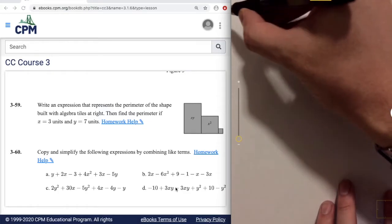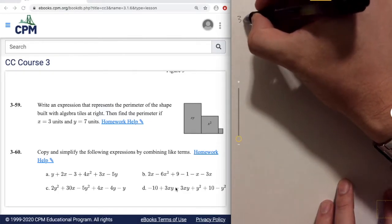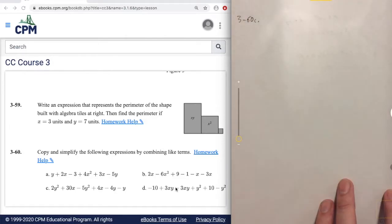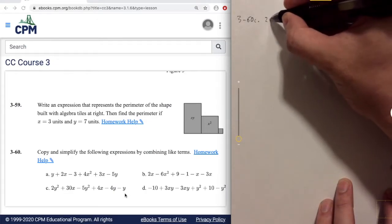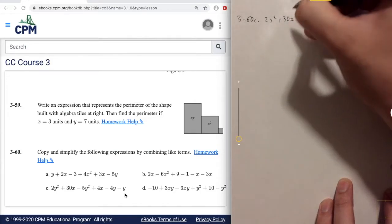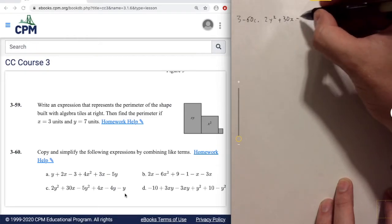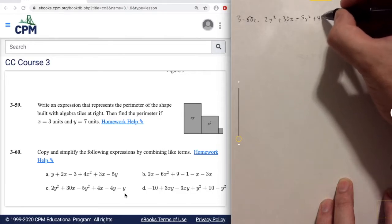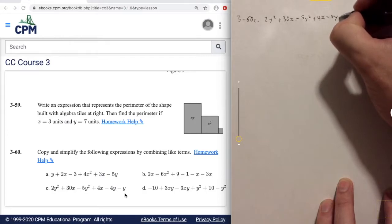Problem 3-60 and we're going to be starting with part C. So first we want to copy out these expressions and then we want to simplify them by combining like terms. So let's start by copying it out. We have 2y squared plus 30x minus 5y squared plus 4x minus 4y minus y.